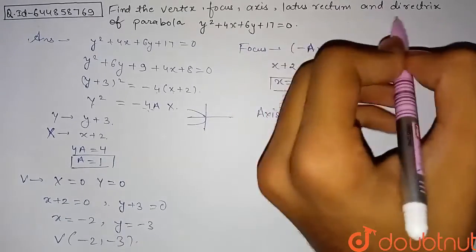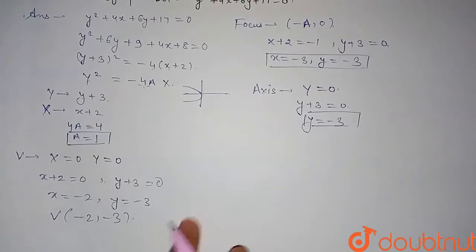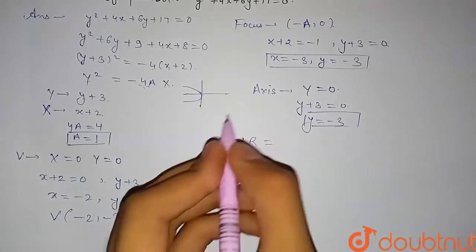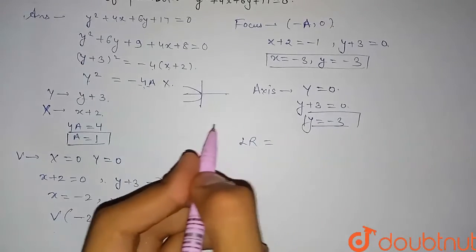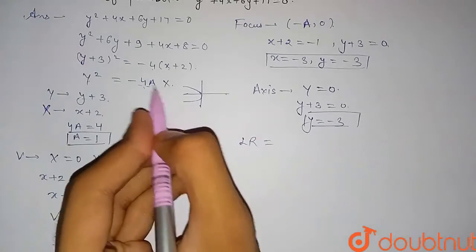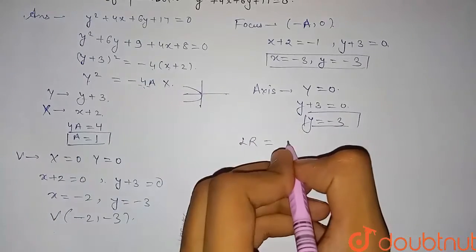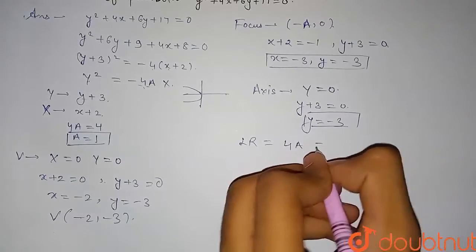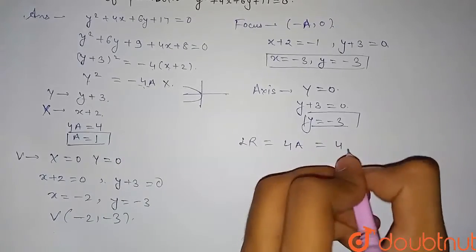Now we find the latus rectum and directrix. The length of the latus rectum is independent of the vertex coordinates, so it is the same for both the standard and shifted parabola. The length of the latus rectum is given by 4a = 4 × 1 = 4.